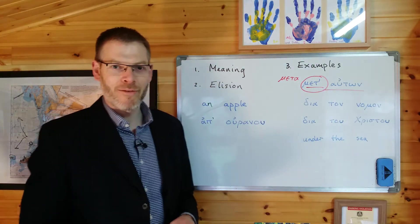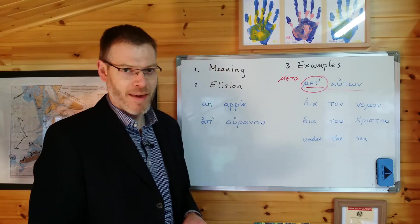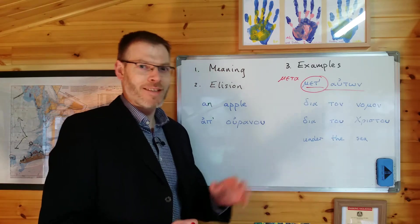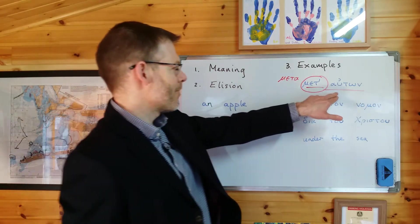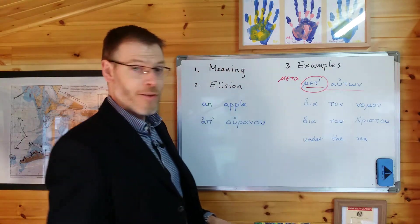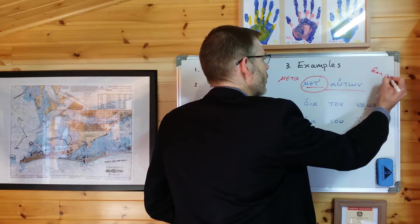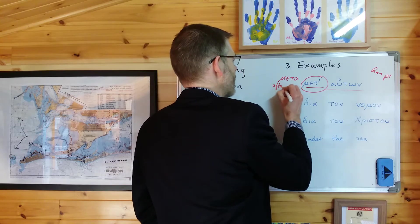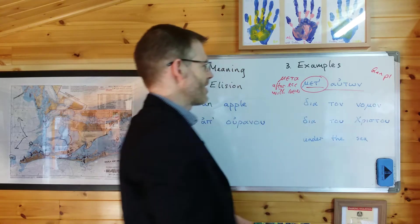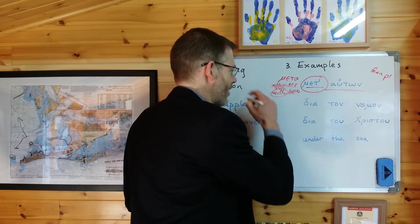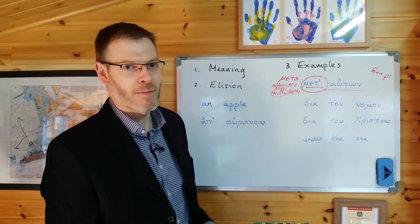Meta — remember our little mnemonic: "after breakfast I met a man with a big hat." So meta means "after" in the accusative, "with" in the genitive. Now we look at its complement: auton comes from autos, which is a third person pronoun, but this is genitive plural. Meta, which means "after" in the accusative and "with" in the genitive — we're going to select the genitive meaning. So it means "with" plural them. Met'-auton means "with them."